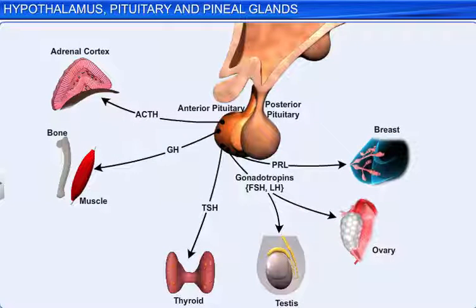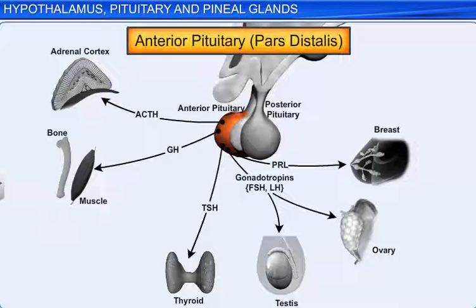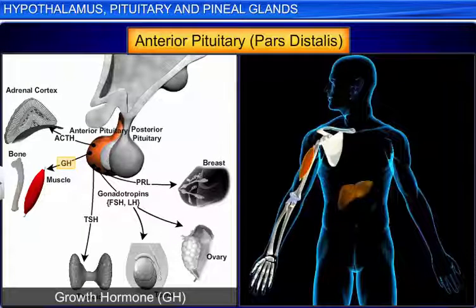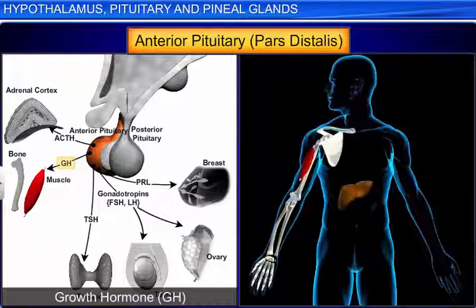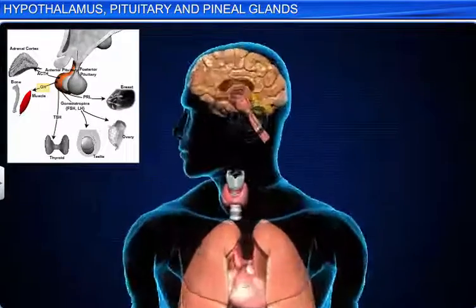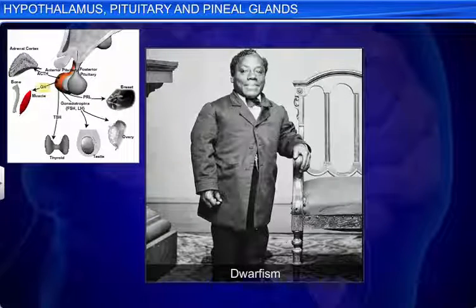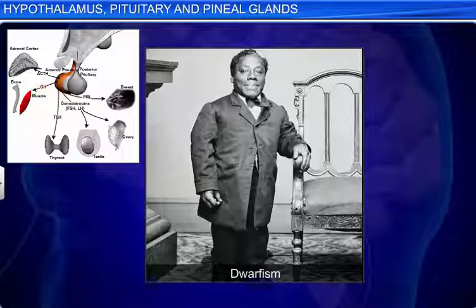The growth hormone, or somatotrophic hormone, acts on the liver, skeletal muscle, cartilage, and bone, and causes cells to grow and multiply. Hyposecretion of this hormone during the growth years or puberty causes dwarfism, in which both bone and organs fail to grow and body proportions become childlike.